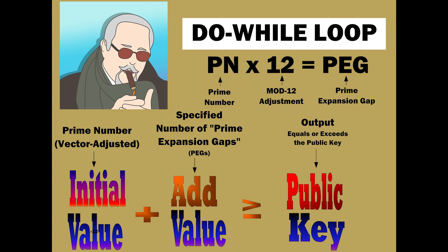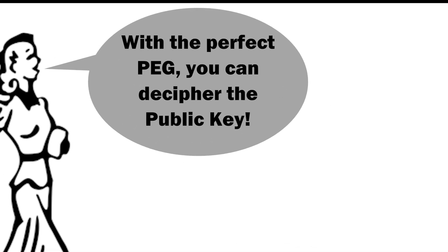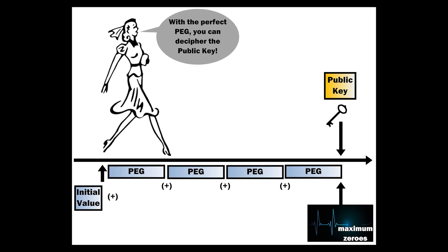Multiply your chosen prime number by 12 to give you the prime expansion gap. Now, add the initial value to the specified number of prime expansion gaps that equals or exceeds the public key. With the perfect peg, you can decipher the public key.